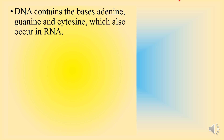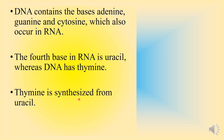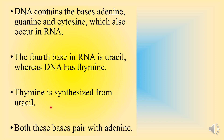DNA contains the bases adenine, guanine, and cytosine, which also occur in RNA. The fourth base in RNA is uracil, whereas DNA has thymine. Thymine is synthesized from uracil. Both these bases pair with adenine.